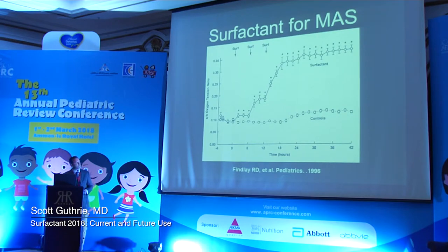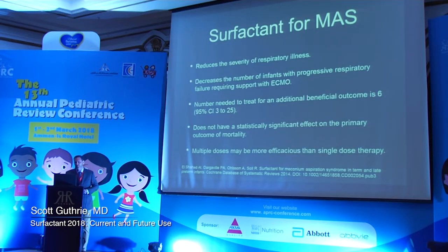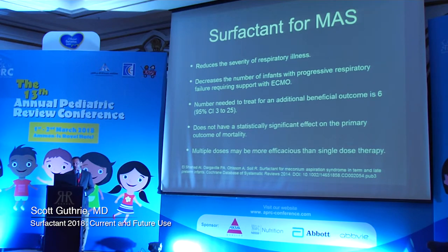Looking at the evidence — from a case series from 1996 — multiple doses of surfactant were given, and those babies did improve as surfactant was administered to wash the meconium out of the airway. Surfactant does appear to help with meconium aspiration syndrome; it can reduce the severity of illness, and the number needed to treat for a beneficial outcome is just six infants. It doesn't necessarily impact mortality, but it is something I would certainly recommend as we try to help these infants. Do remember that multiple doses may be needed.